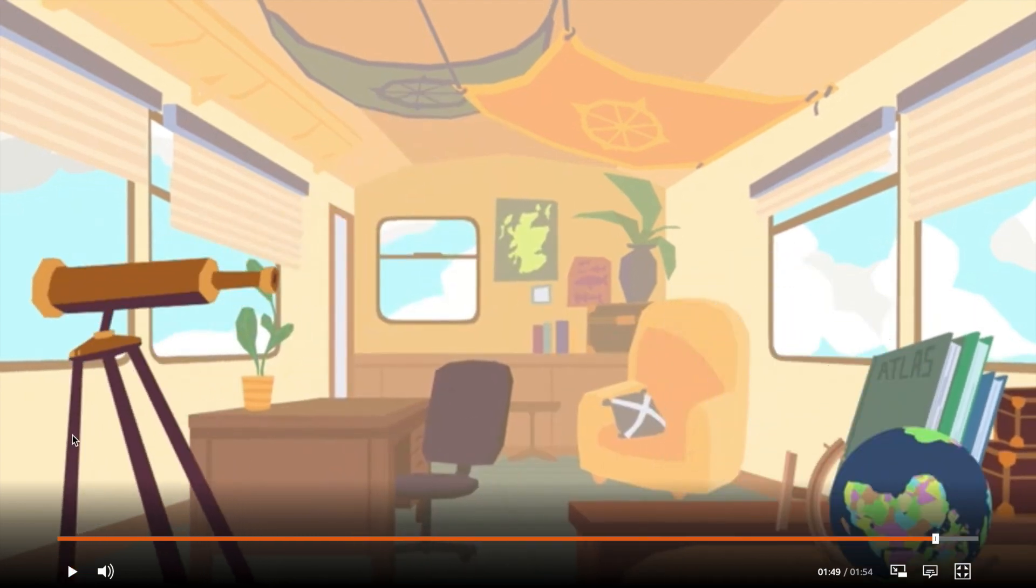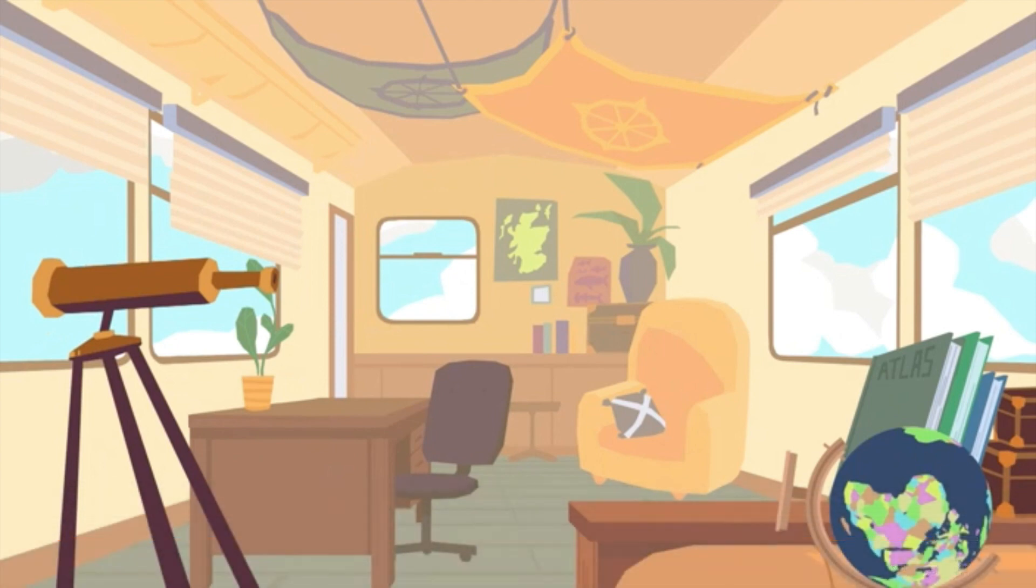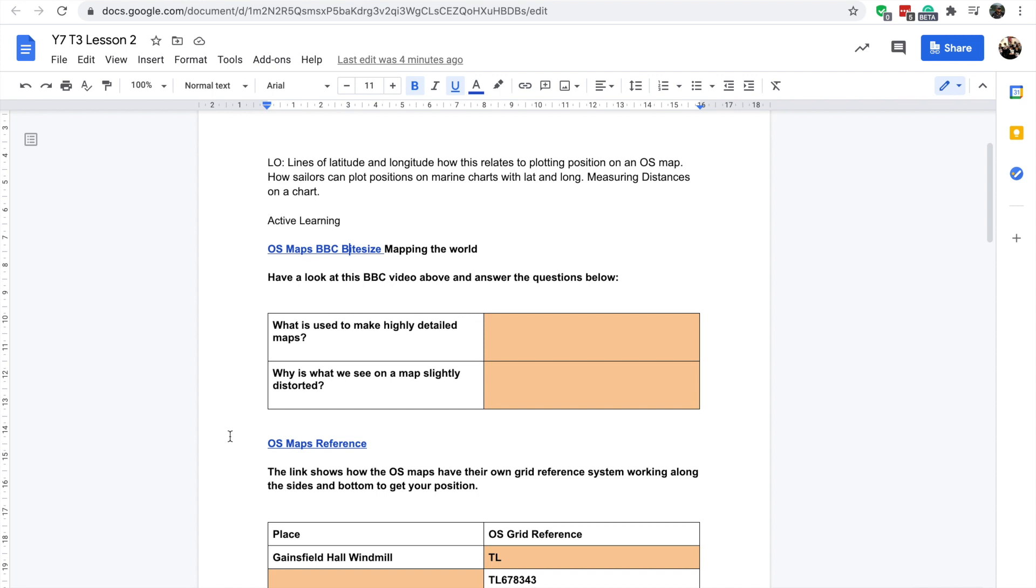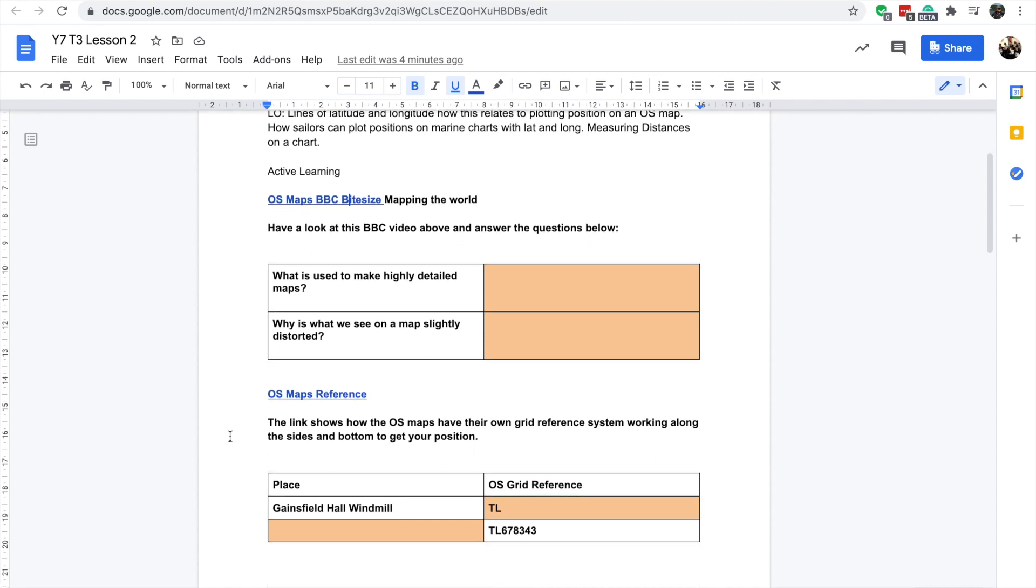So that's quite a simplistic view of the globe and charts, but I thought she'd put it together quite beautifully. Okay, let's go back. So having looked at that, the questions we need to answer. What is used to make highly detailed maps? That was towards the end of the video. Why is what we see on the map slightly different and slightly distorted? So if you don't know the answer to these, I suggest you just go back on this video and the answers are there. Dig them out and fill in these two boxes and carry on.